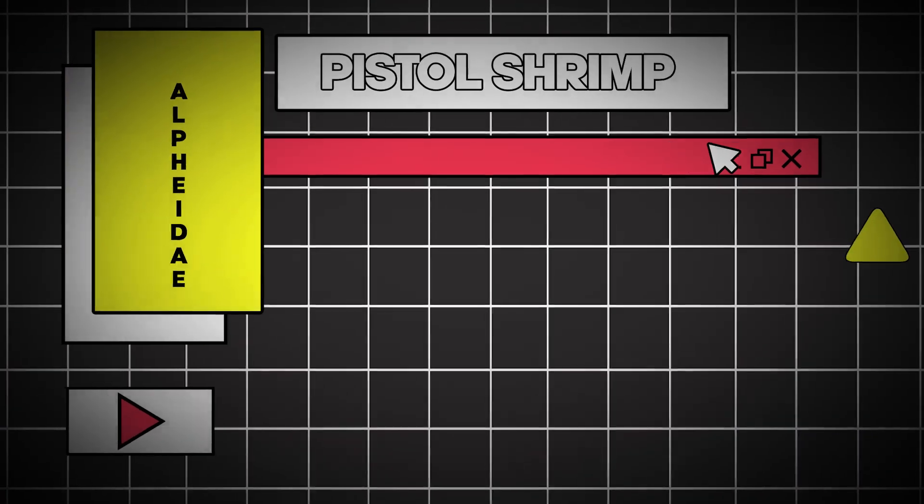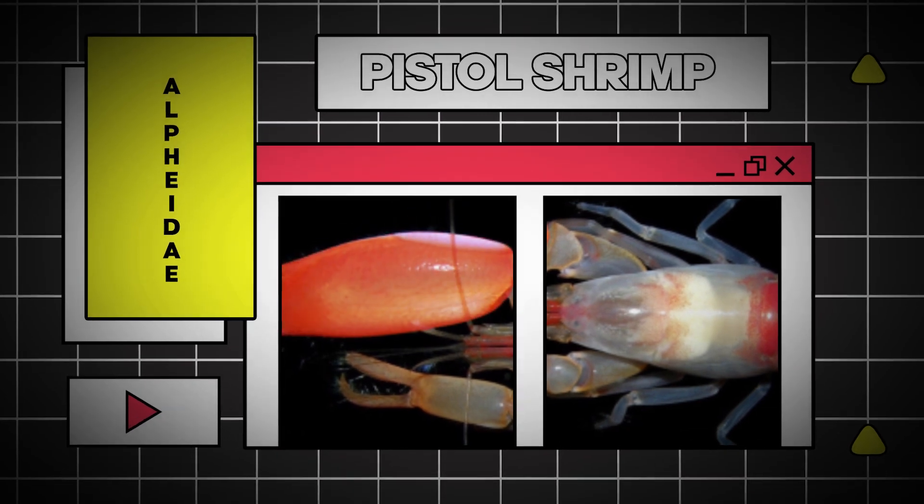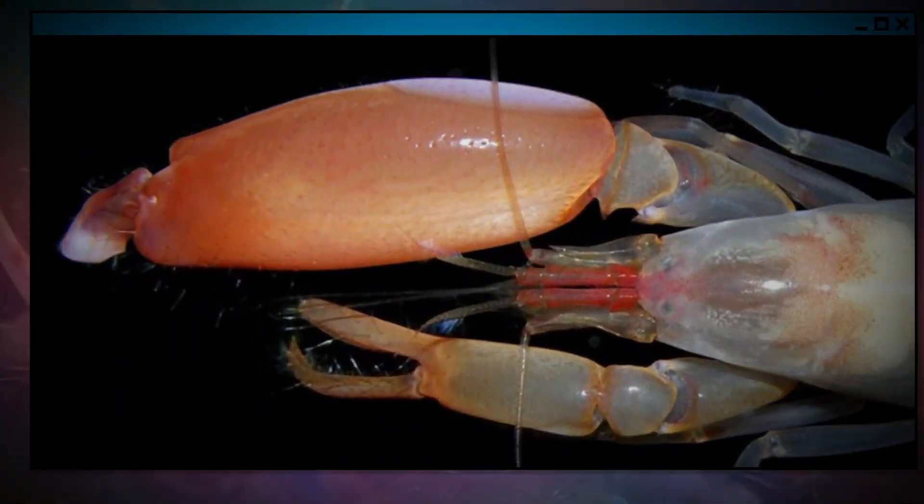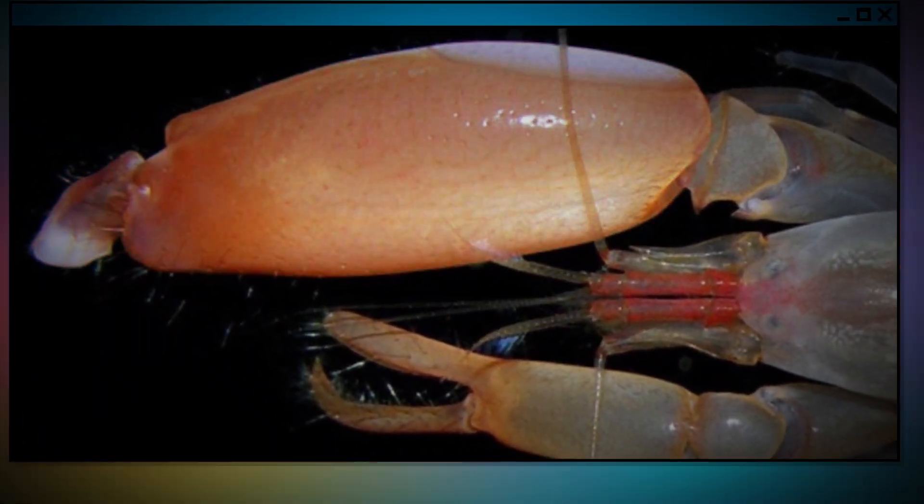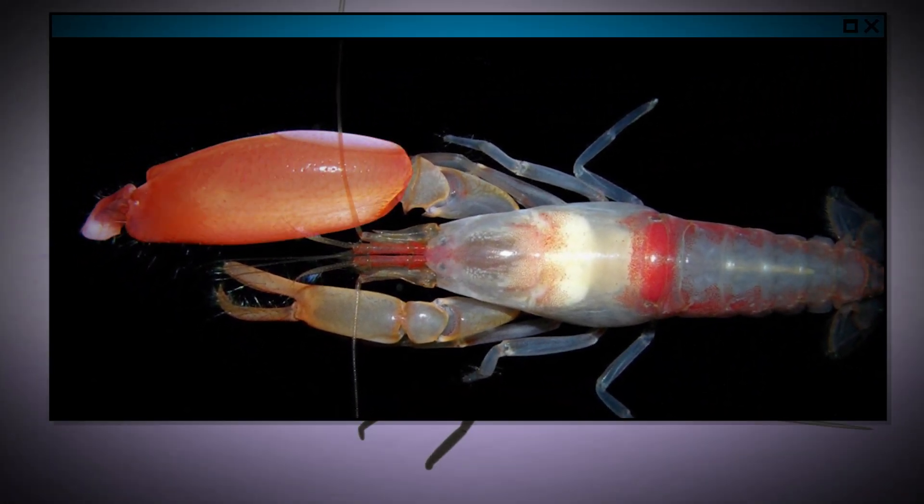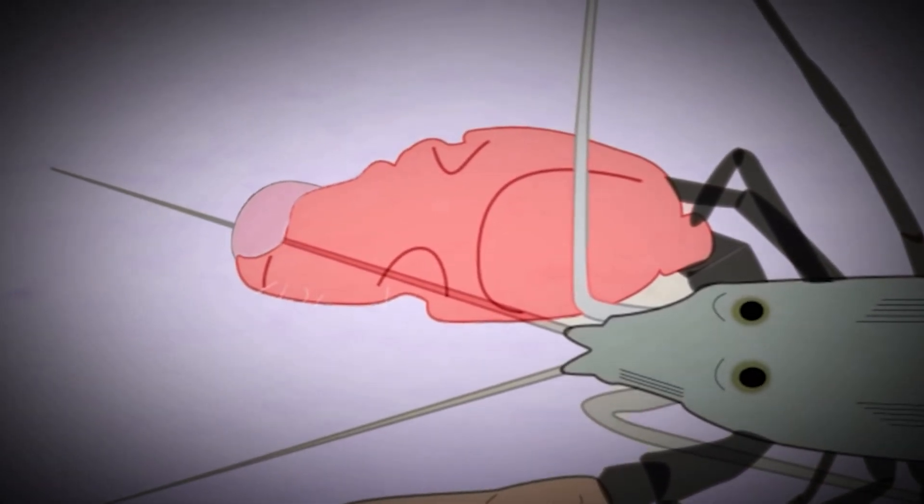Do you know what a pistol shrimp is? These tiny crustaceans might be small, but they have one of the coolest hunting techniques in the animal kingdom. First, let's talk about the anatomy of the pistol shrimp. This little guy has a unique snapping claw that is disproportionately large compared to the rest of its body. When it wants to hunt, it flexes its large claw, then releases it suddenly.